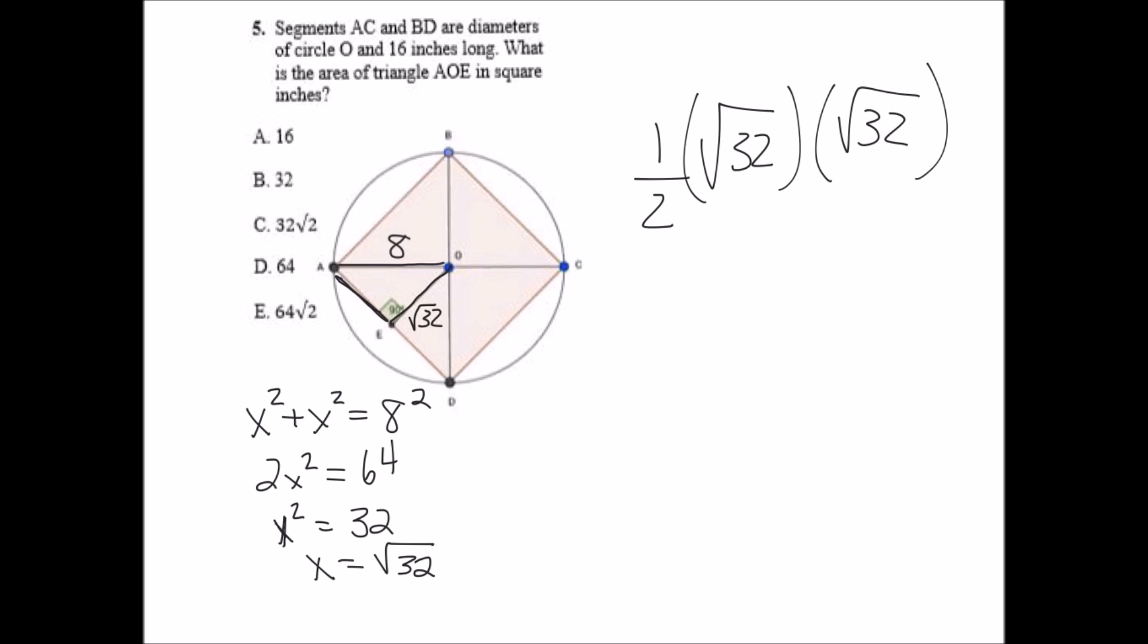Well, if you're clever, what you're going to see is the square root of 32 times the square root of 32 is like one half the square root of 32 squared, or one half of 32, which equals 16. The correct answer is A, 16.